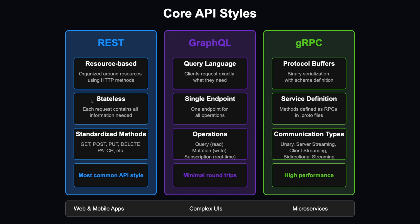One advantage of REST APIs is that they are stateless, meaning each request contains all the information needed to process it — no prior requests are required. It uses standard HTTP methods: GET for fetching data, POST for storing data, PUT or PATCH for updating data, and DELETE for deleting data.